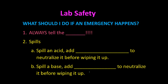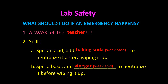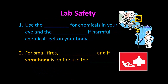What should you do if an emergency happens? Always tell the teacher. For spills: if you spill an acid, add baking soda or a weak base to neutralize it before wiping it up. If you spill a base, add vinegar or a weak acid to neutralize it. Use the eyewash for chemicals spilled in your eye, and the safety shower if harmful chemicals get onto your body. For small fires, use an inverted beaker.